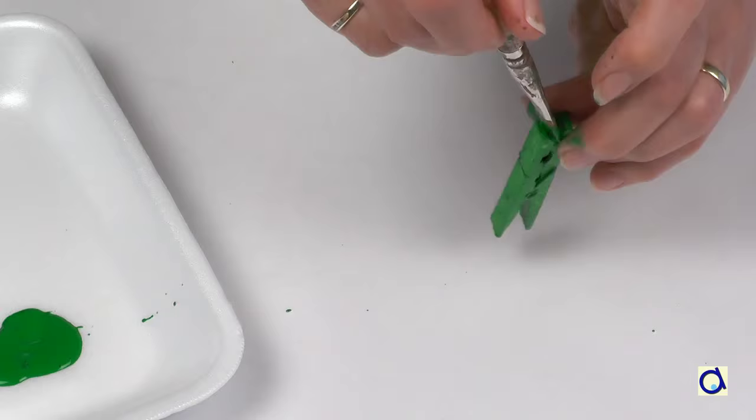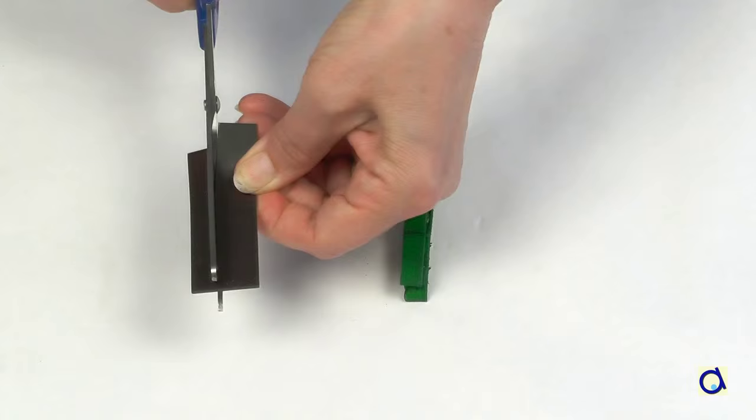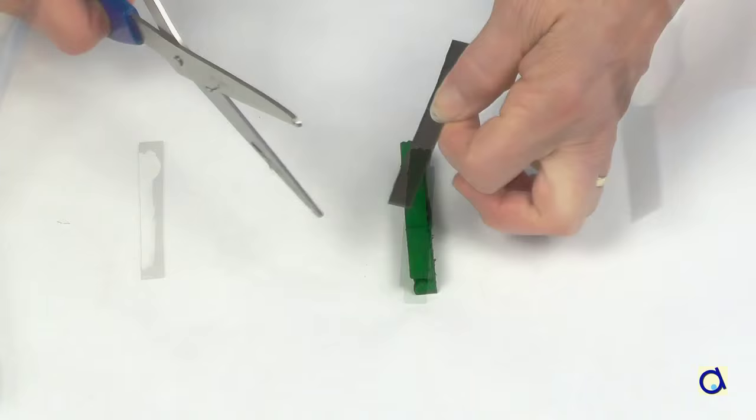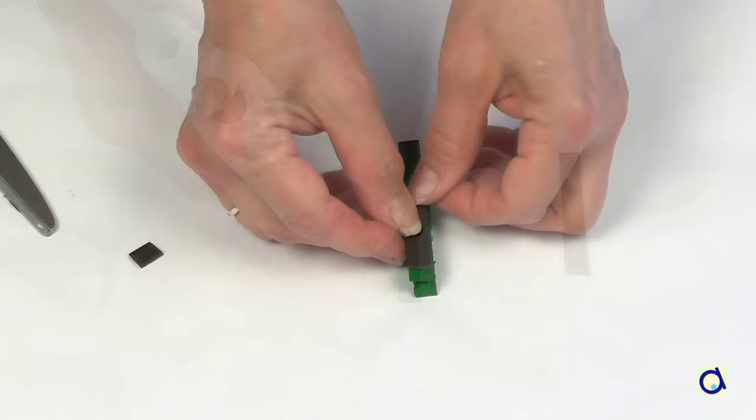Cut a piece of magnetic tape to the same width and length as the clothespin. Glue the magnetic strip on the clothespin. If the tape is not self-adhesive, glue it on the clothespin with hot glue.